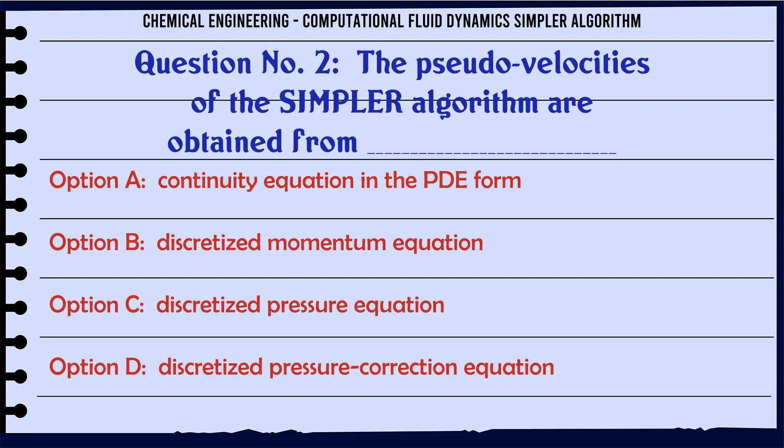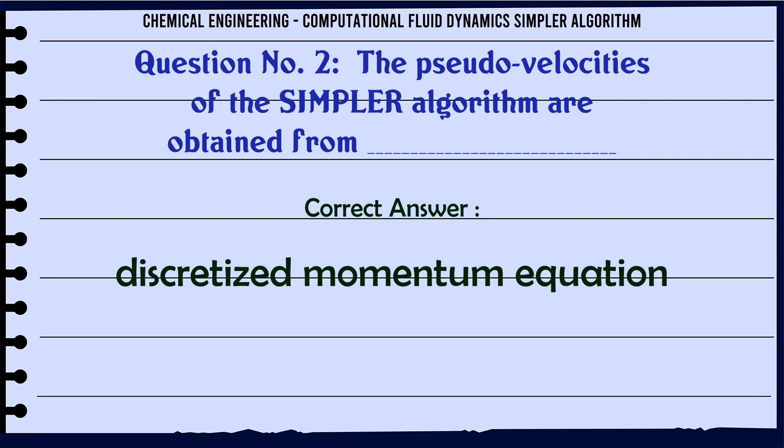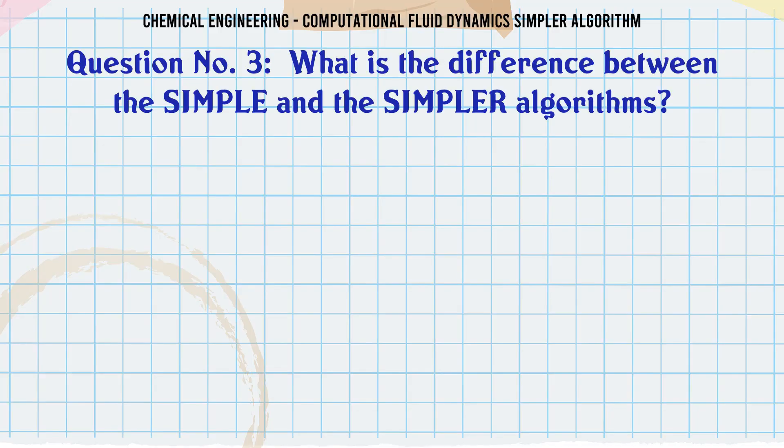The pseudo-velocities of the SIMPLER algorithm are obtained from: A. Continuity equation in the PDE form, B. Discretized momentum equation, C. Discretized pressure equation, D. Discretized pressure correction equation. The correct answer is: Discretized momentum equation.